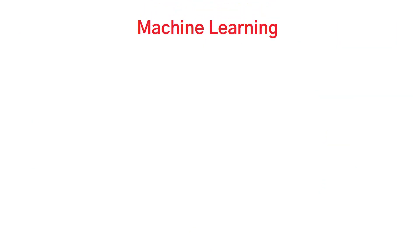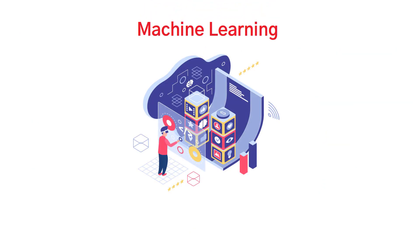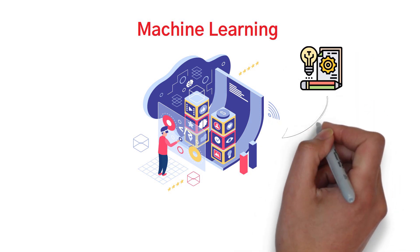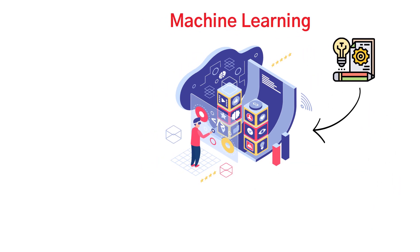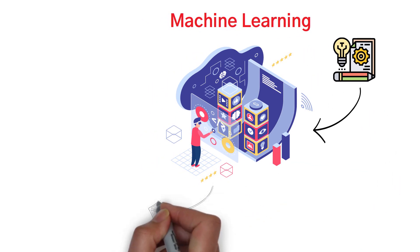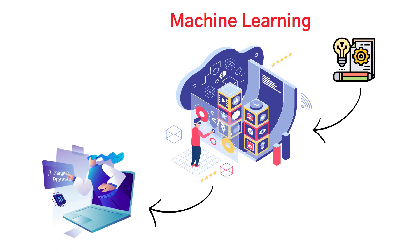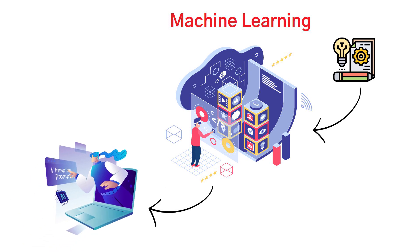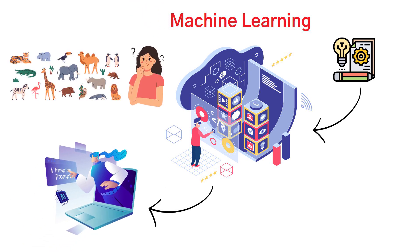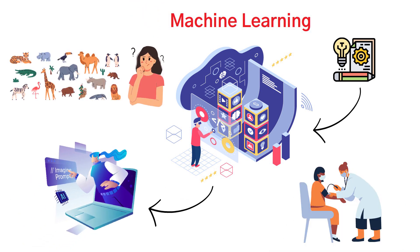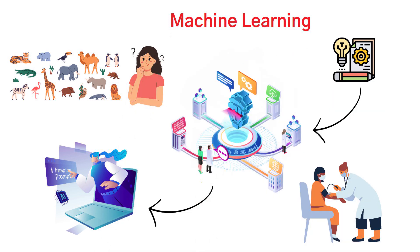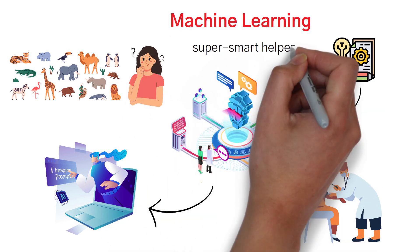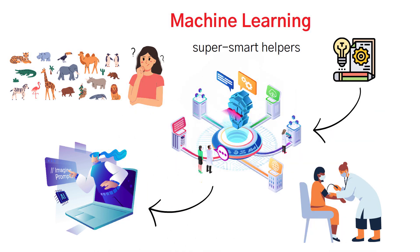Machine learning is a bit like that. We give computers lots of examples and let them learn from those examples to make decisions or do tasks, like recognizing animals or even helping doctors diagnose illnesses. It's like teaching computers to be super smart helpers.